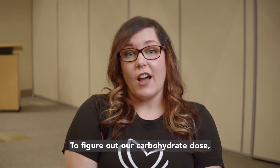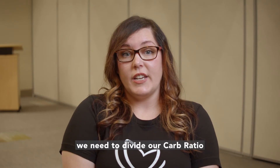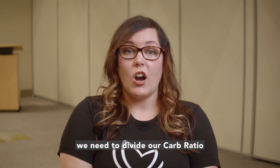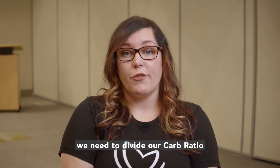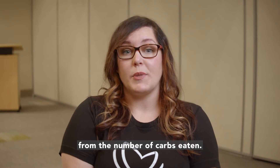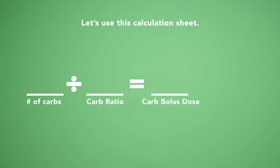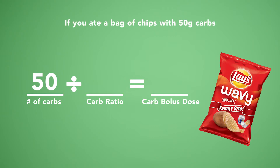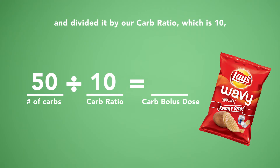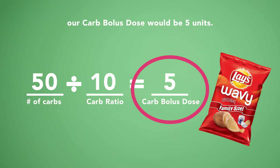To figure out our carbohydrate dose, we need to divide the number of carbs eaten by our carb ratio. Let's use this calculation sheet. If you ate a bag of chips with 50 grams of carbs and divided it by our carb ratio, which is 10, our carb bolus dose would be 5 units.